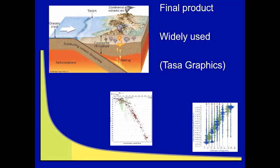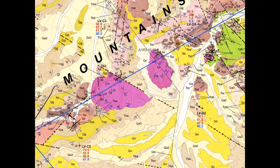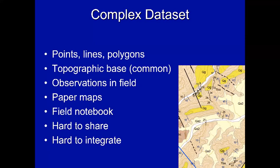In geology and Strabo Spot, the same long-tail situation applies. A detailed geologic map in Strabo is a really complicated dataset — points, lines, polygons, topographic base, field observations — collected digitally or from paper maps. Once you have this data, the challenge is how to share it, integrate it, and connect it with other datasets. Strabo Spot provides an electronic way to share data, and you've seen its power throughout this workshop.